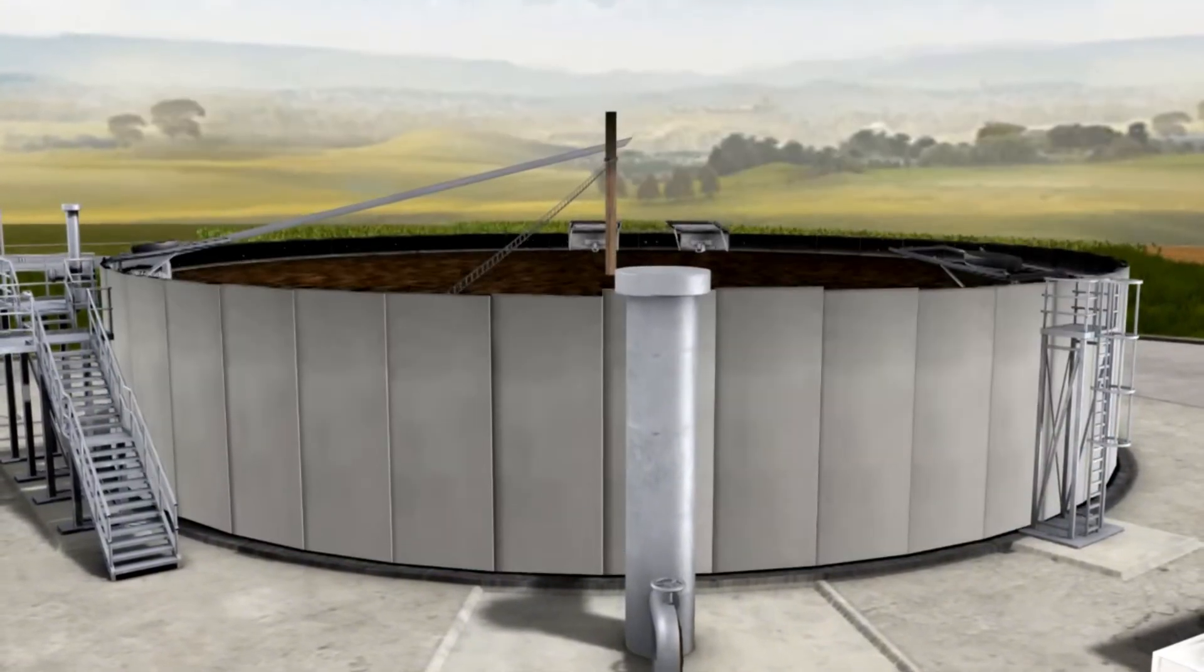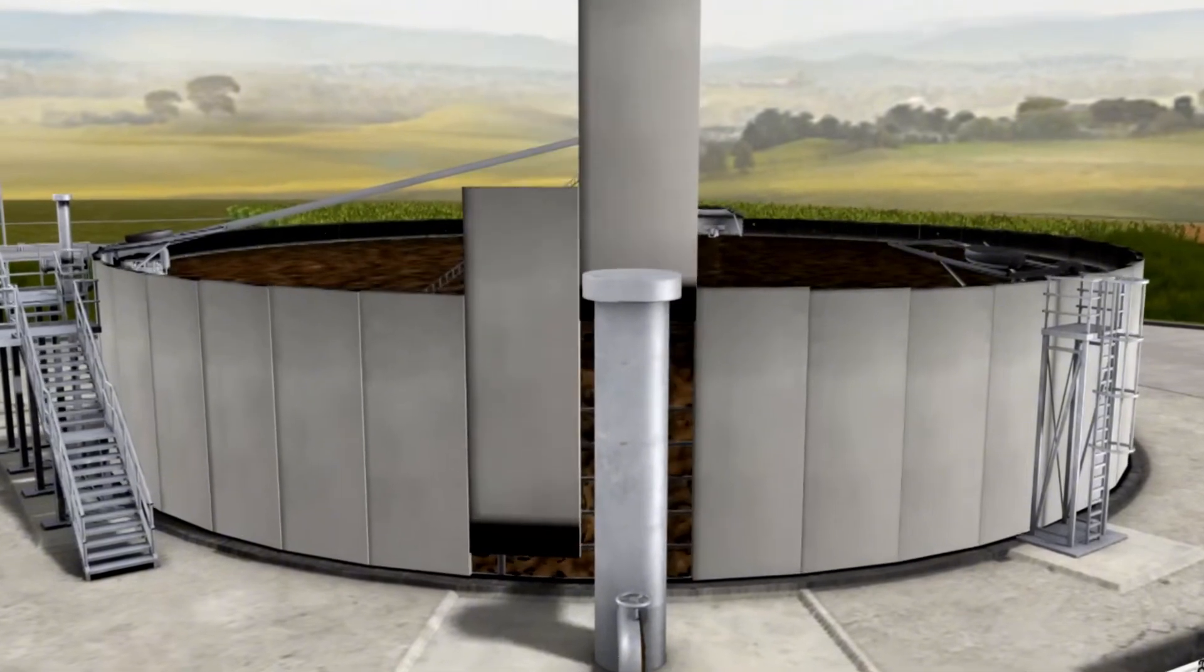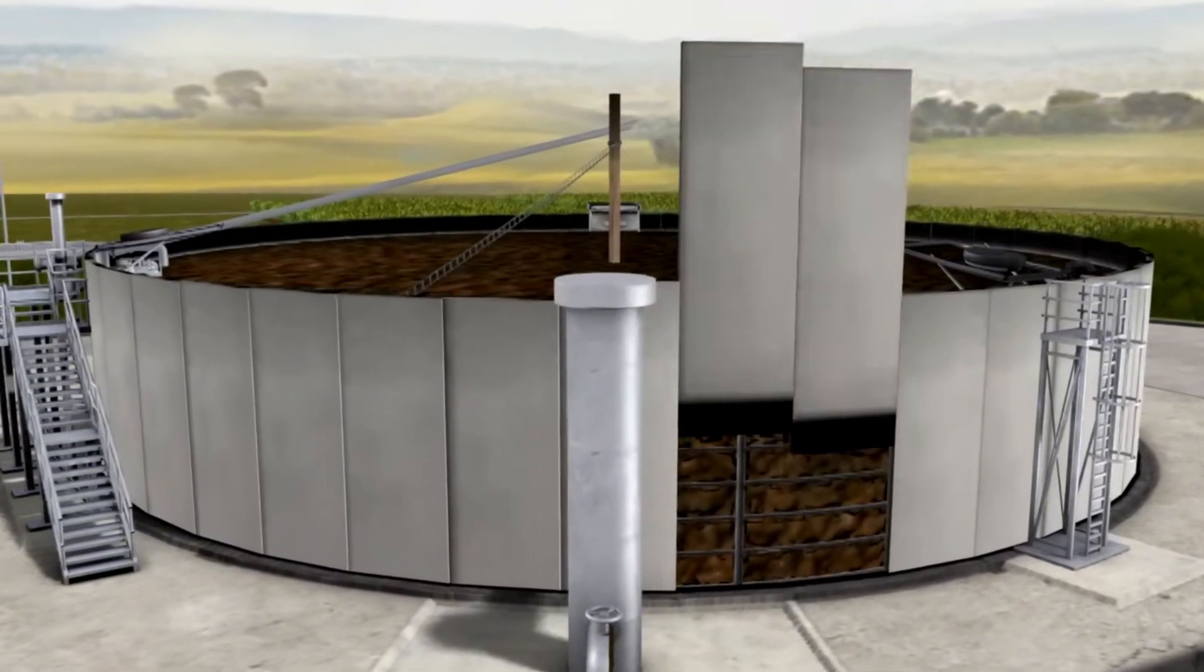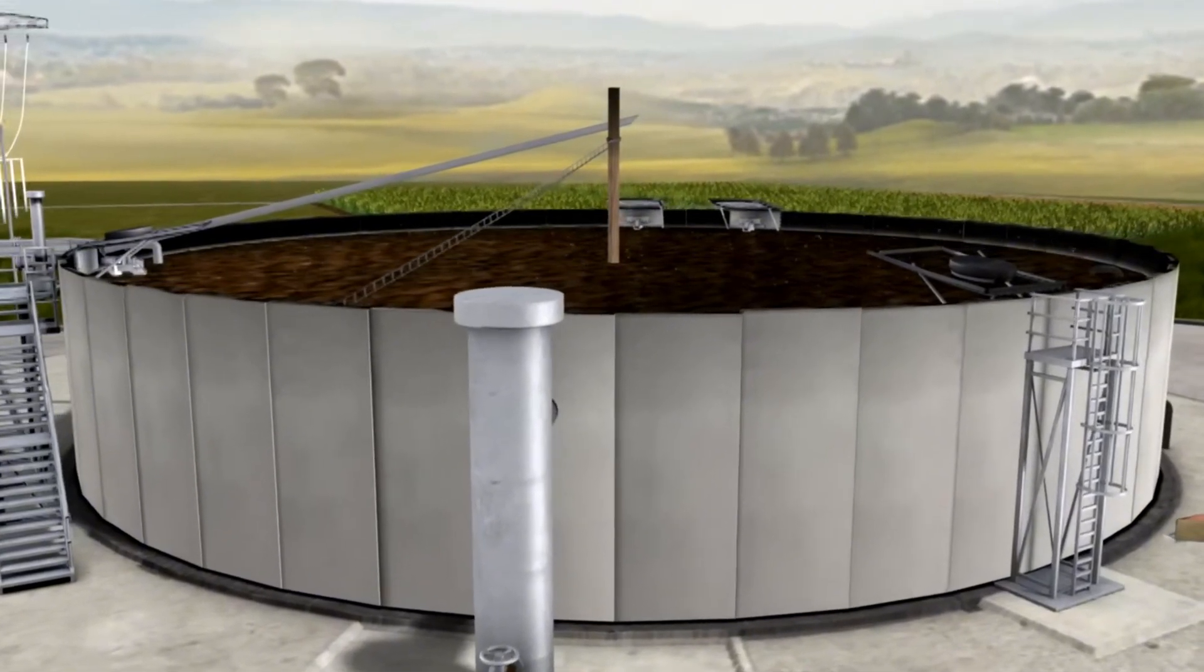Through the modular construction with prefabricated concrete elements, Envitek provides an especially flexible and cost-efficient method of construction for its fermenters, which can be optimally adapted to the requirements of the customer.